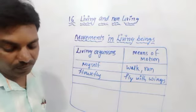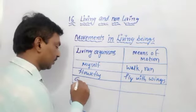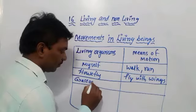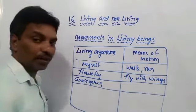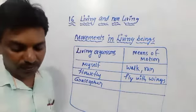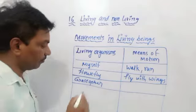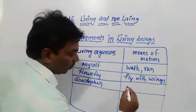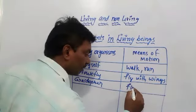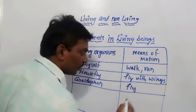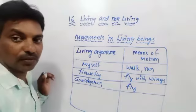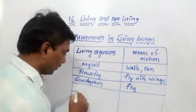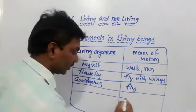The next organism is a grasshopper. How can a grasshopper move? Grasshopper moves by flying. Sometimes a grasshopper also walks on the land with its legs.